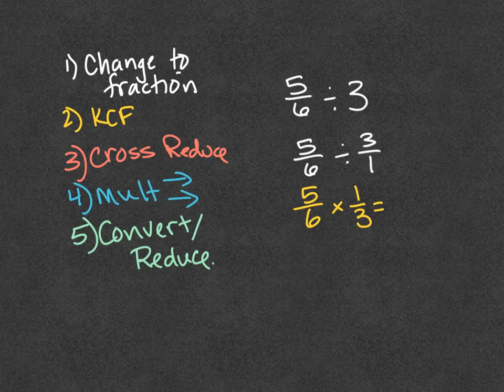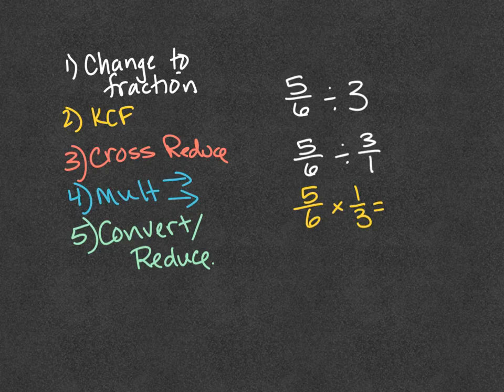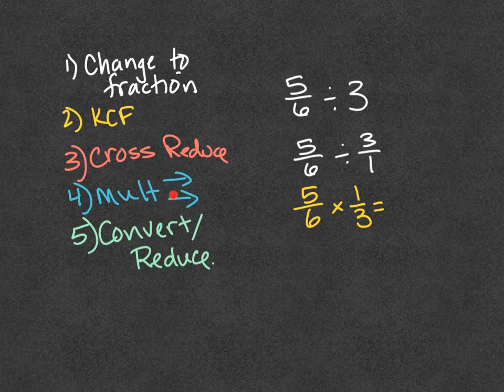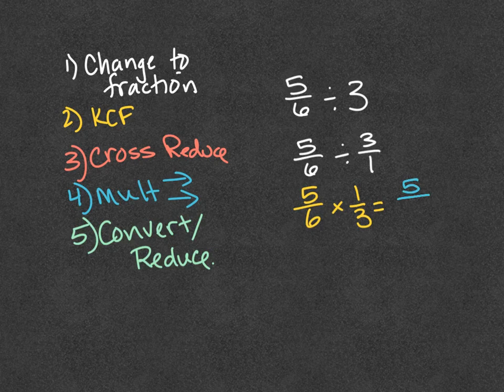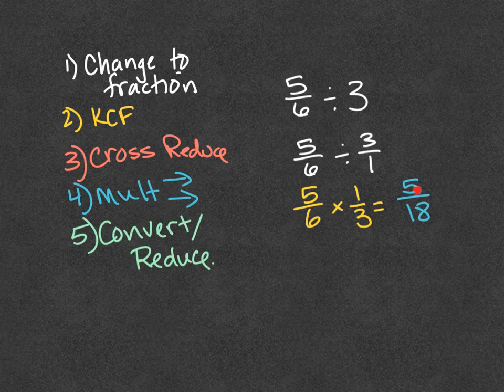Then, we are on cross-reduction, if we can do any, of 1 and 6. Nothing goes in other than 1. 3 and 5, no. 3 does not fit into 5 equally. So, no, we're not cross-reducing there this time. Sometimes we can't. It's okay. Multiply straight across: 5 times 1 is 5, 6 times 3 is 18. Convert, if it's improper. It's not. That's no man is standing straight up. He's not upside down. He's proper. Reduce, if you can. There's nothing that goes into both 5 and 18 equally. So, I'm as reduced as I can get.